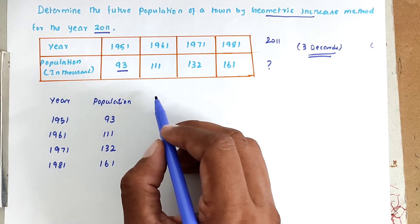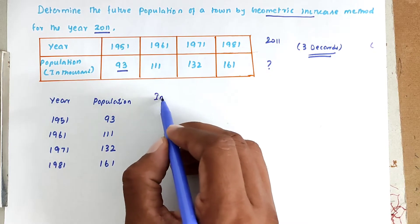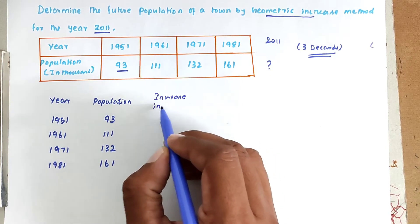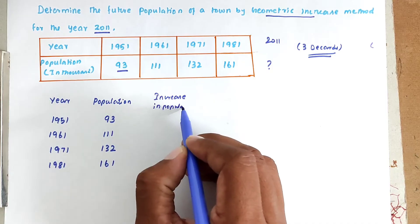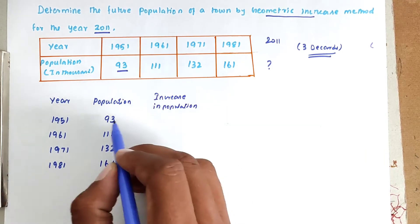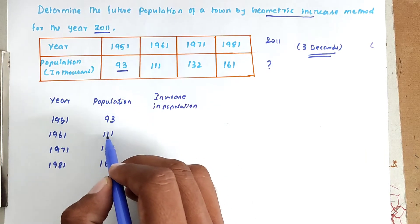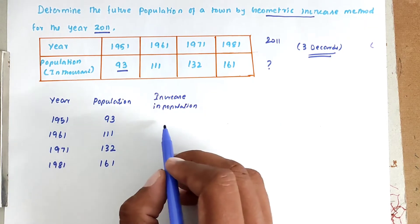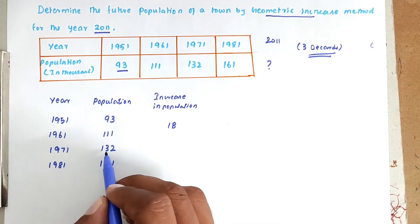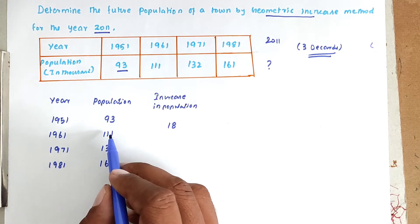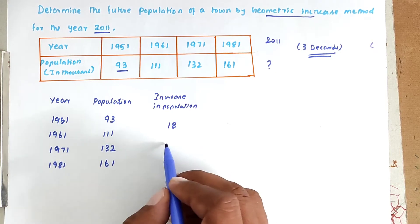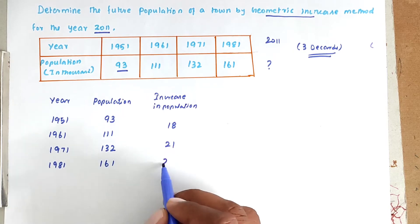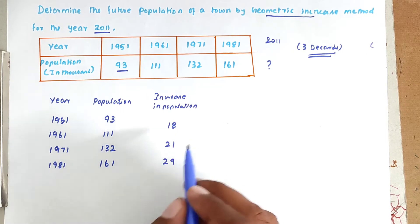Now we have to find out the increase in population. From 93,000 to 1,11,000, the increase is 18,000. Then 1,32,000 minus 1,11,000 gives 21,000. Then 1,61,000 minus 1,32,000 gives 29,000. These are the increases in population for each decade.